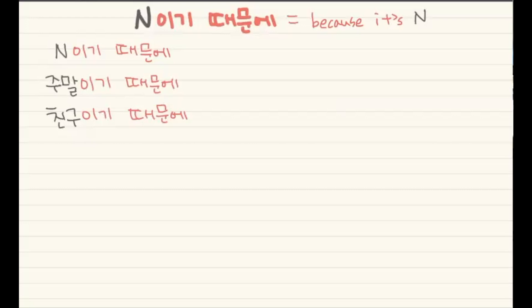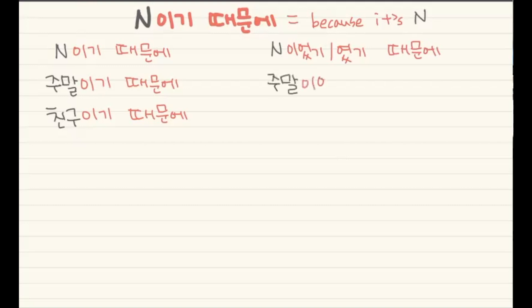This form also has a past tense: 이었기 때문에 or 였기 때문에, depending on the final consonant. So 주말 → 주말이었기 때문에, and 친구 → 친구였기 때문에.